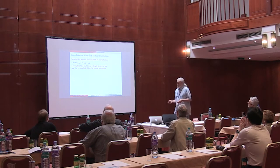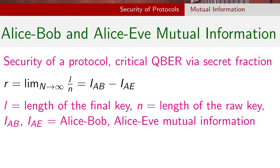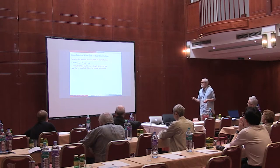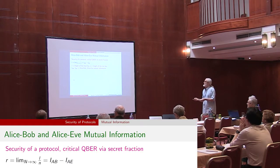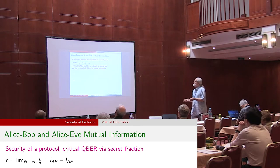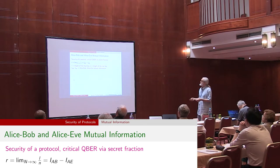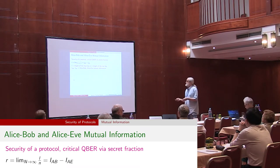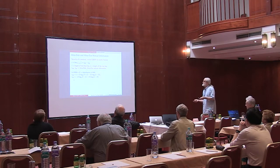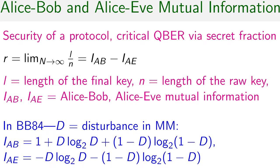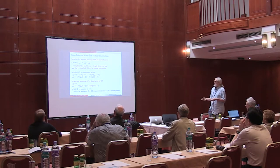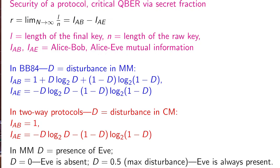What about the security of all the protocols we have seen? BB84 is unconditionally secure. For two-way protocols, we standardly define security according to the value of the secret fraction — the length of the final key over the length of the raw key, which should be non-negative and non-zero. In BB84, we define mutual information between Alice and Bob, and mutual information between Alice and Eve. In two-way protocols, however, the mutual information between Alice and Bob is always equal to one.